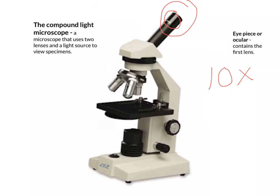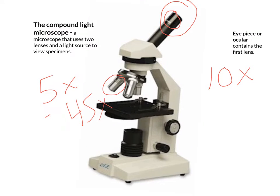Typically the magnification of the eyepiece ranges from 5x up to 20x. The second lens is in the objective, which contains a lens that ranges anywhere from 5x to 45x. On this particular microscope there are only three objectives. In college, the microscope will most likely contain a fourth objective — the oil immersion lens — which allows for greater magnification by placing a drop of oil on the slide. The drop of oil acts as a third lens.